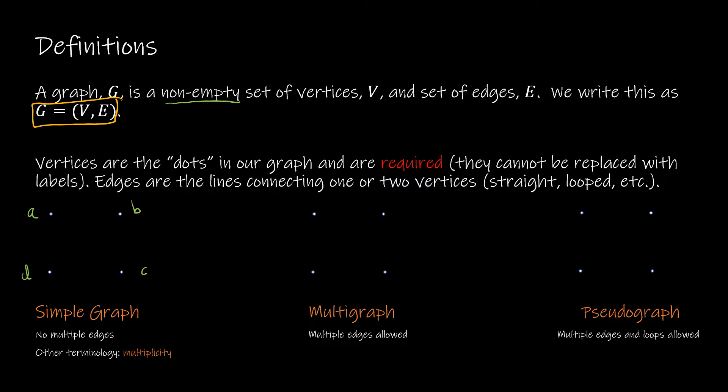One thing I want to point out is that vertices are the dots and cannot be replaced with labels. The biggest mistake I see students make is drawing A, B, C, D but not having any vertices, using the label as the vertex. This will not get you any credit in my classroom. Please make sure it's very clear that you're connecting vertices to vertices, not labels to labels.